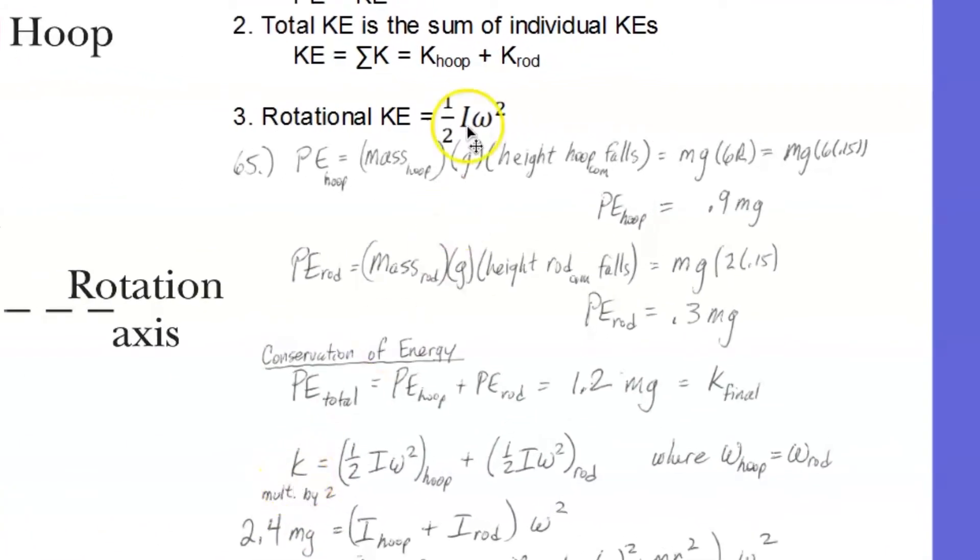The kinetic energy is the sum of the kinetic energies, which is one-half I omega squared for each object. So here it is for the hoop, and here it is for the rod. I know they both have the same omega, because they are swinging as one object. So the omega over here is the same as the omega over here.